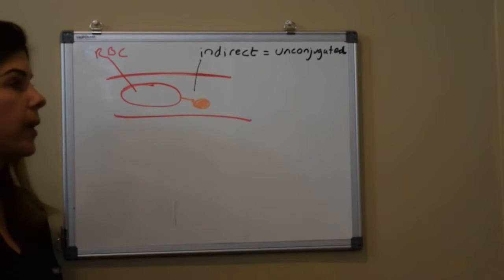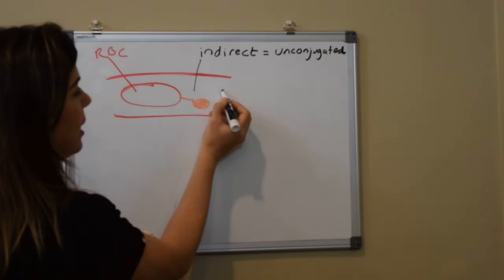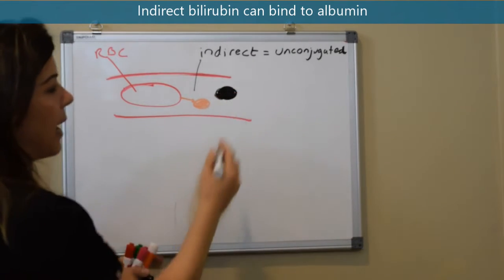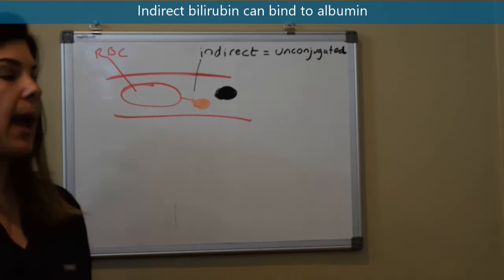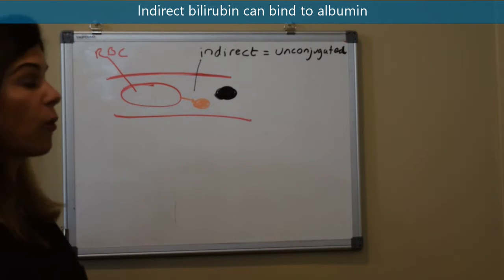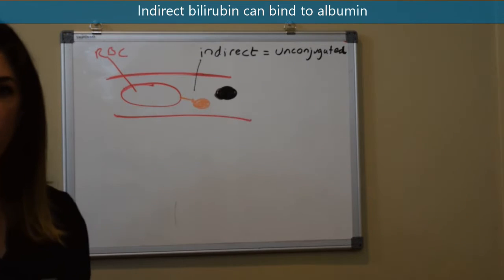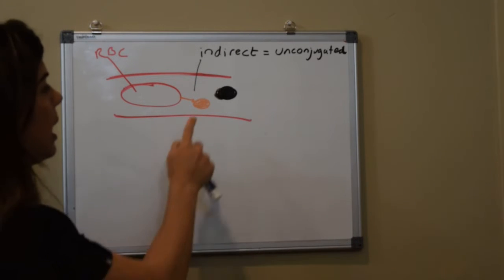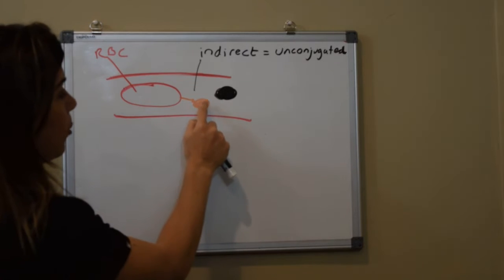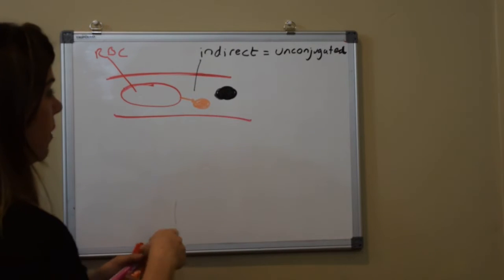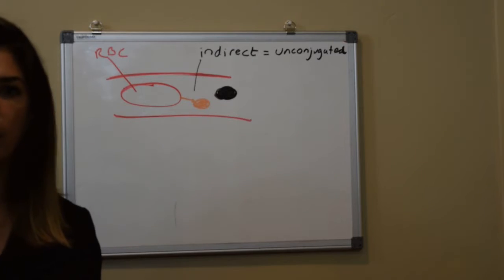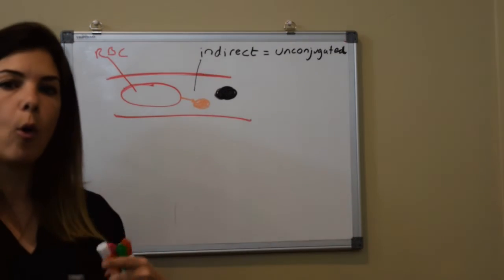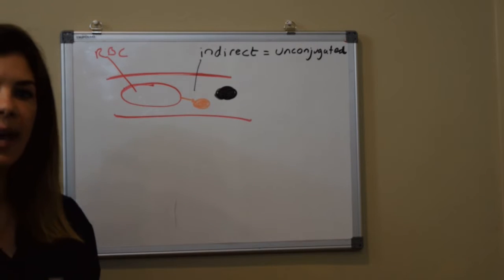What we really care about is how much free indirect bilirubin is traveling around the body because that will tell us the chance of kernicterus happening. The vast majority of this bilirubin doesn't necessarily travel completely freely around the body. It can be bound to albumin. Albumin is a protein in blood and it is responsible for carrying a lot of substances around the body as well as creating the oncotic pressure in the blood. This bilirubin will be bound to the albumin which will help it be carried around the blood.